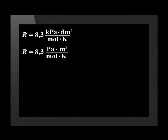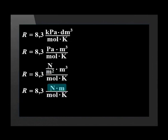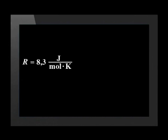So we can write R's unit as Pascal meters cubed divided by mol Kelvin. A Pascal is a Newton per meter squared, so these units simplify as Newton meters divided by mol Kelvin. A Newton meter is also called a Joule. So the unit of R is Joules divided by mol Kelvin, which can also be written as Joules times mol to the minus 1 times Kelvin to the minus 1.